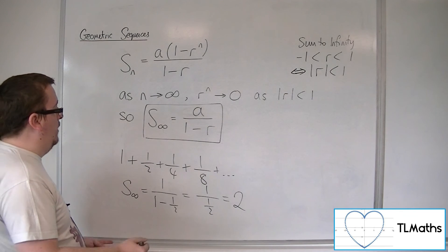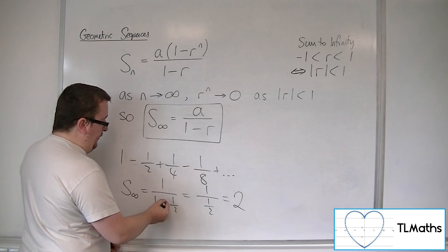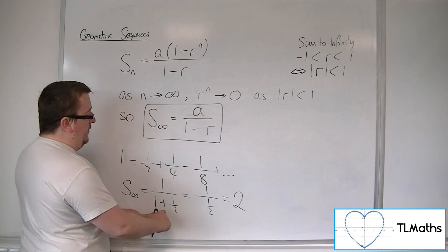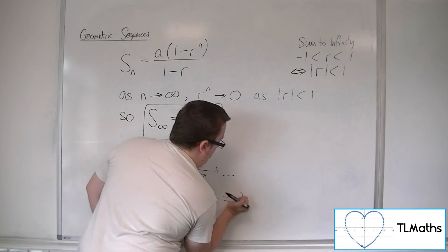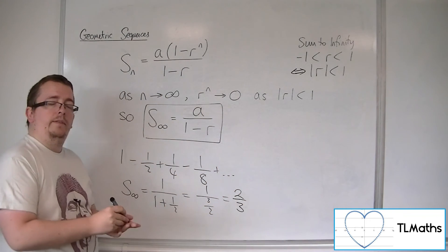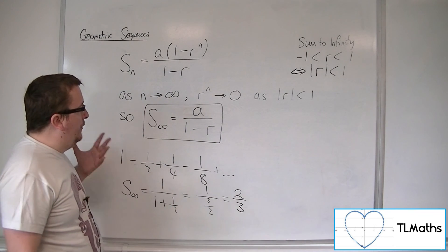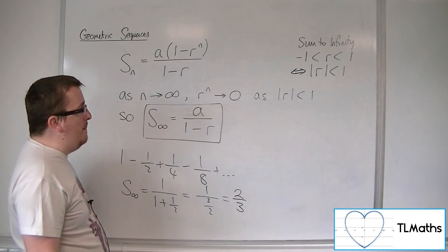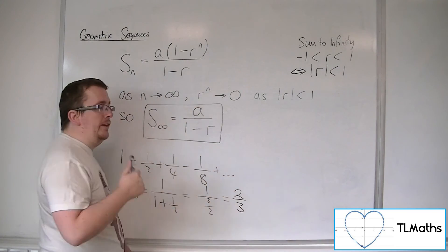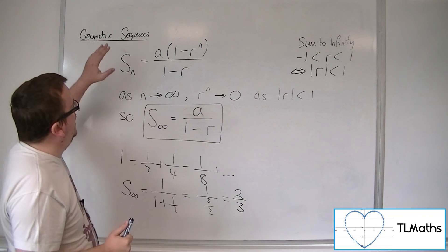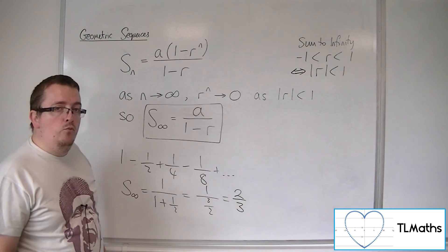We also had the series 1 minus a half plus a quarter minus an eighth, where the common ratio was minus a half. So we get 1 over (1 minus (minus a half)), which is 1 over (1 plus a half), giving 1 over 3 halves. So this would add up to 2 thirds as a sum to infinity. Remember, this only exists and only works when r is between minus 1 and 1 — that was the whole restriction, and it won't work without that.